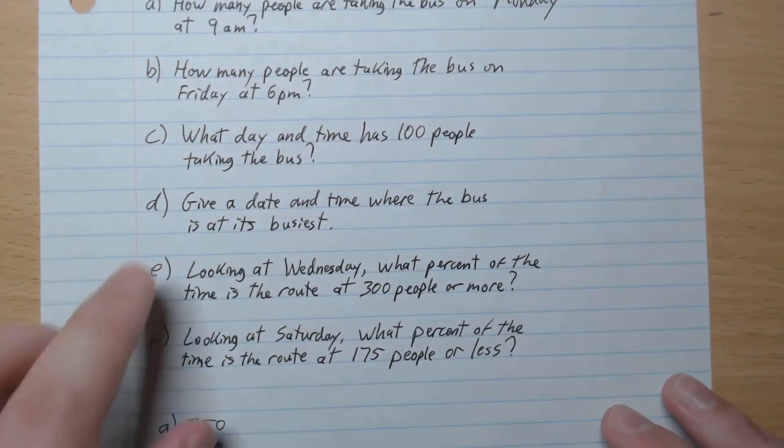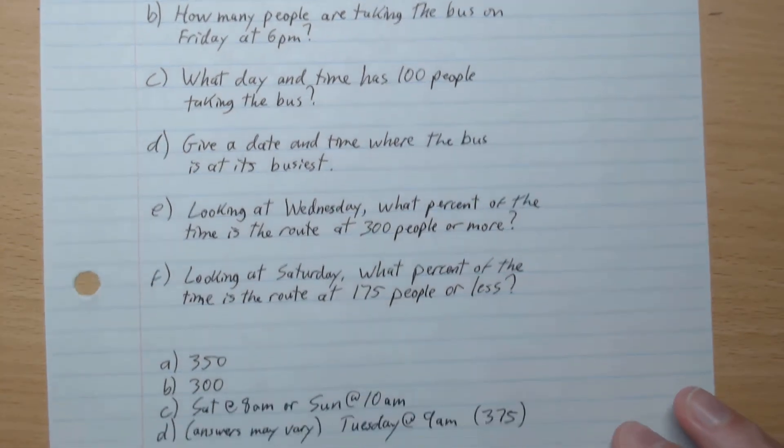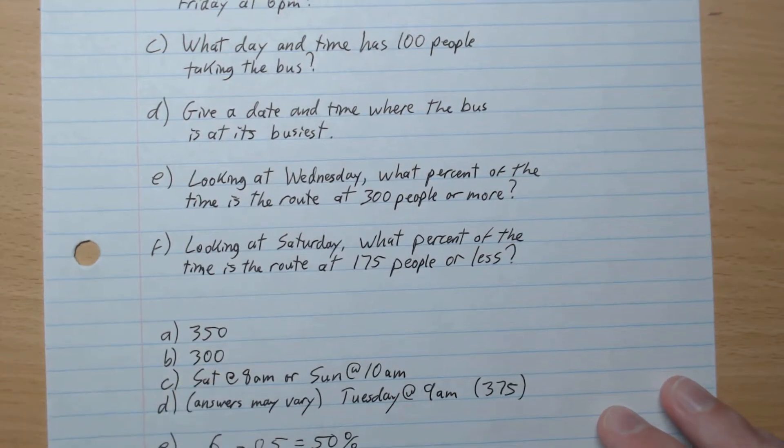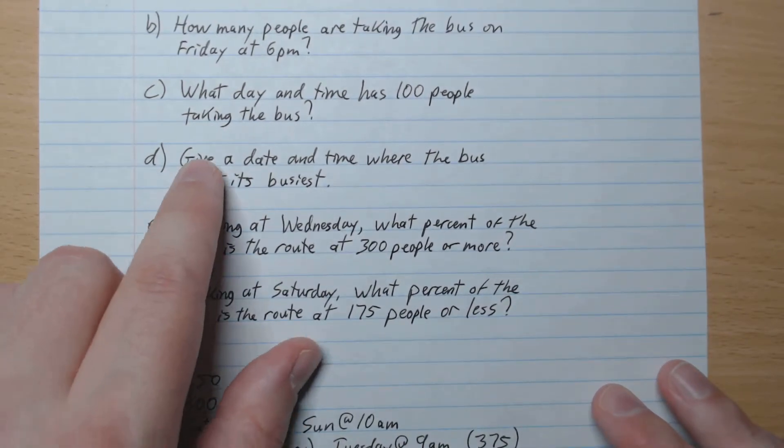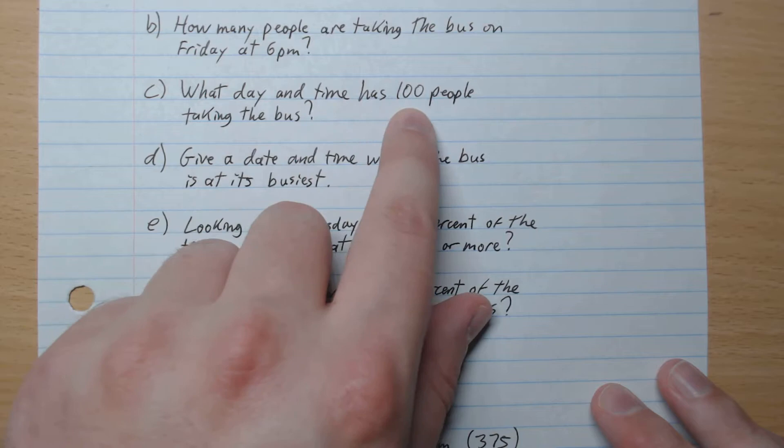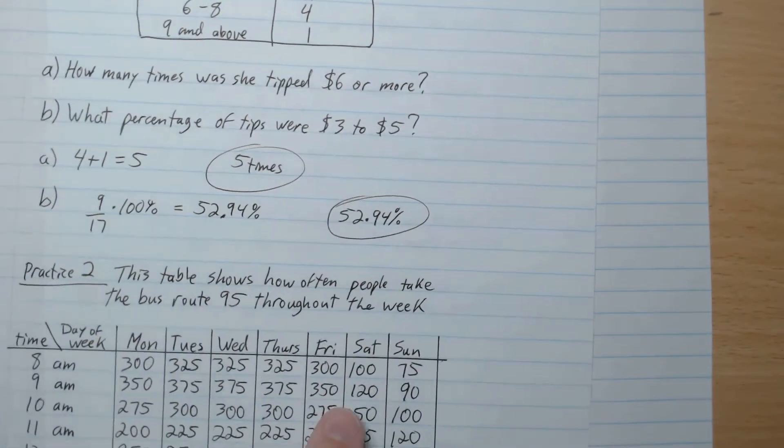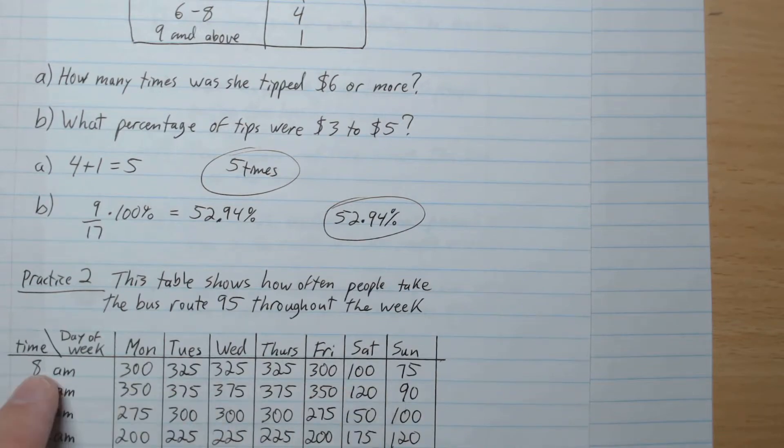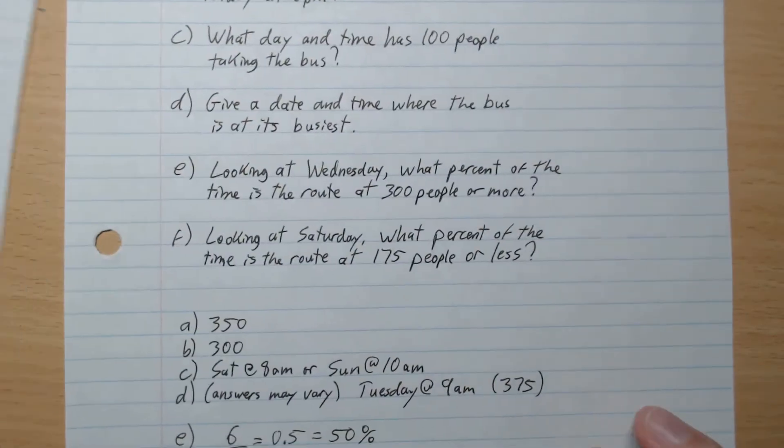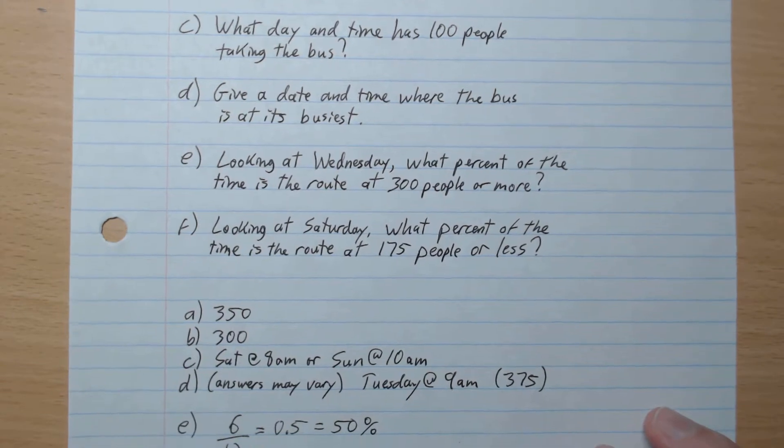B, how many people are taking the bus on Friday at 6pm? That was 300. C, what day and time has 100 people taking the bus? So we look on our table looking for 100. We have that here. Saturday, 8am or Sunday at 10am are the two possible answers.